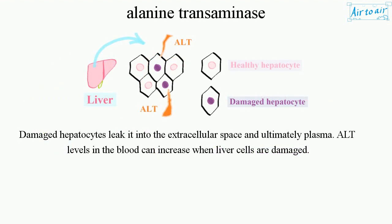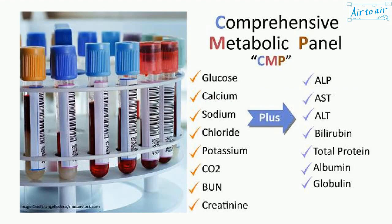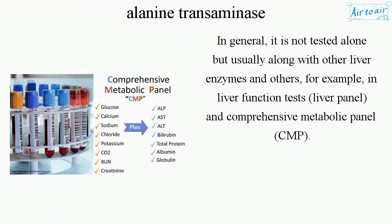Damaged hepatocytes leak it into the extracellular space and ultimately plasma. ALT levels in the blood can increase when liver cells are damaged. In general, it is not tested alone but usually along with other liver enzymes, for example in liver function tests, liver panel, and comprehensive metabolic panel (CMP).